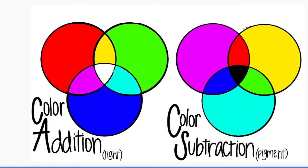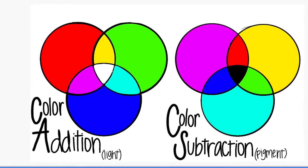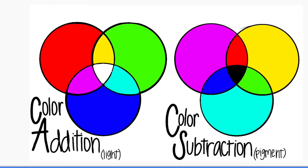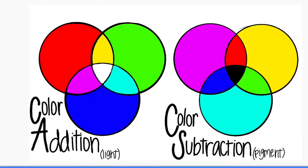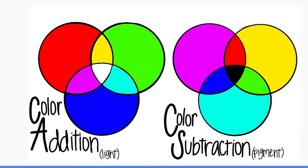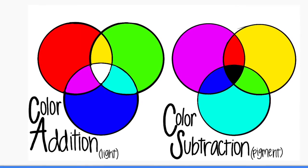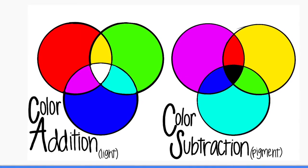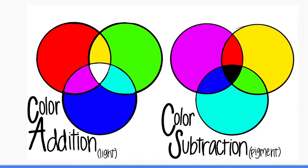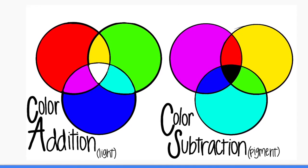If you go back to the triple Venn diagram shown earlier in the video, you will see that there are two of them — one for color addition and one for color subtraction. If you look at the subtraction diagram, you'll see that the opposites are what are being subtracted.